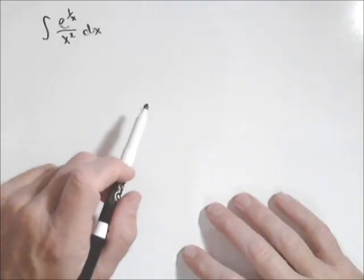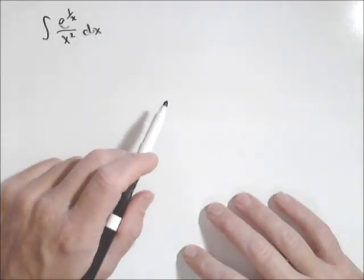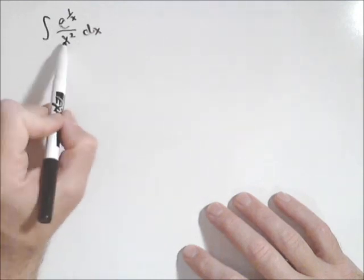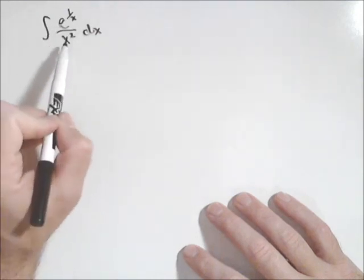So in this video, we're going to do a little more anti-derivative practice. Some may involve u-substitution, some may not. So here's my first one: e to the one over x over x squared dx.